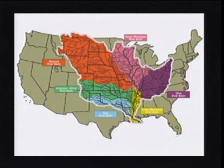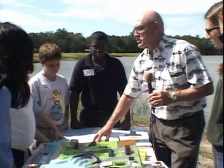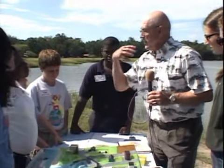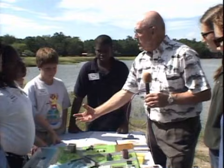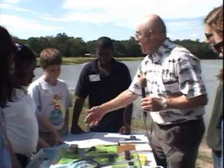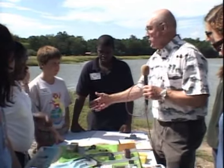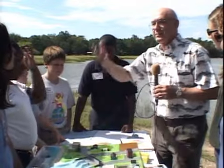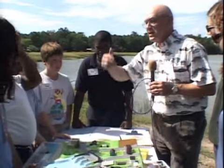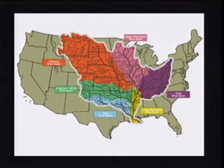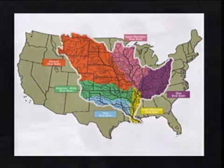When it rains on all of these lands in the Mississippi basin and that rain runs off the land — not all of it runs off. Some of it goes into groundwater, some of it goes back up into trees and is held in the soil, but most of it runs off and it's all going to run down this pathway. So now we're going to move on to our model. This is our enviroscape.